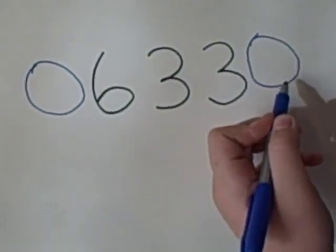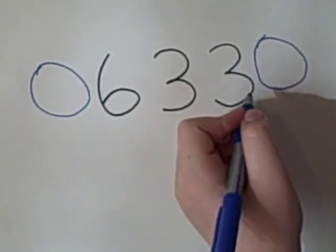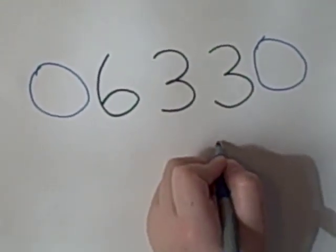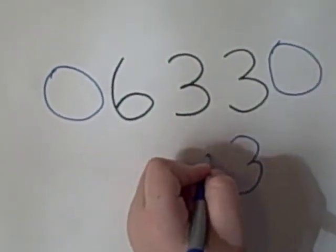You're going to do this problem from right to left. First you want to take 0 plus 3, and that would be 3 of course. So you want to write that down here, then 3 plus 3, so 6.